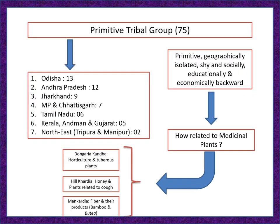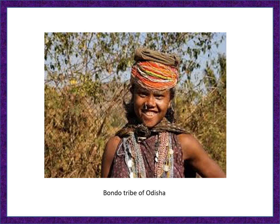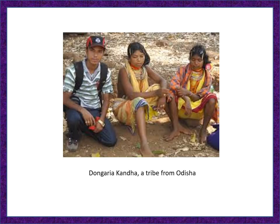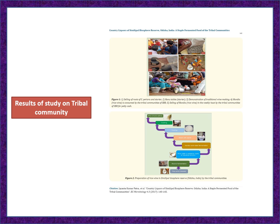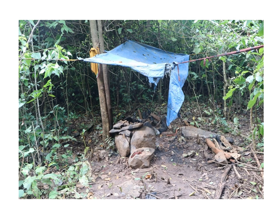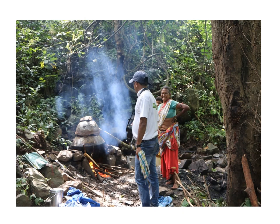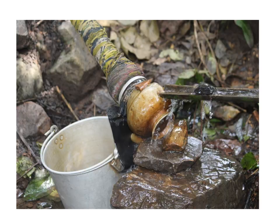Among the Primitive Tribal Groups, Odisha has 13, Andhra Pradesh 12, Jharkhand 9, Madhya Pradesh and Chhattisgarh 7, Tamil Nadu 6, Kerala 5, Gujarat 5, and Northeast including Tripura and Manipur 2. The Bondo tribe of Odisha and the Dongria Kondh — a tribe from Odisha — I was working with them. You can observe a wine preparation technique inside the forest — a beautiful technique.